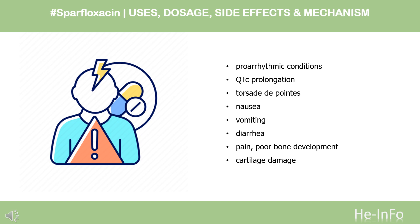Side effects of sparfloxacin on the hematopoietic system: eosinophilia, lymphocytopenia, polymorphonuclear leukopenia, thrombocytopenia. Sparfloxacin also causes anemia. Other side effects of sparfloxacin include photosensitivity, allergic reactions, renal failure, hypokalemia, and hypomagnesemia.